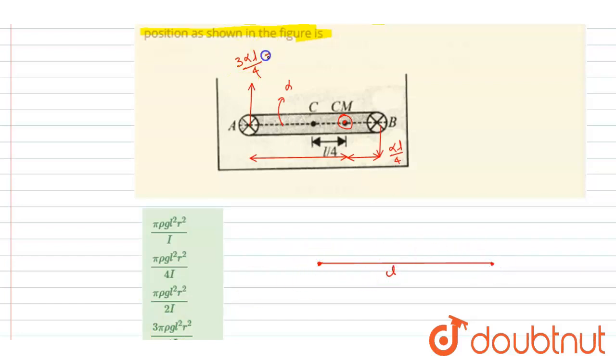So this is acceleration of A, this is acceleration of B. If I write down the acceleration of point A with respect to B, it is 3 alpha L by 4 plus alpha L by 4. Since they will be added, it will be alpha L.